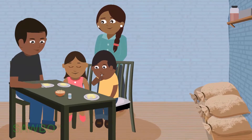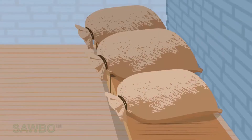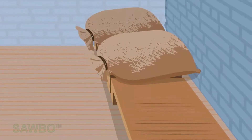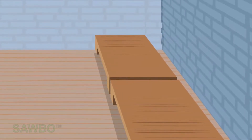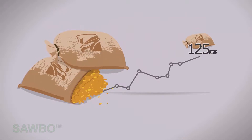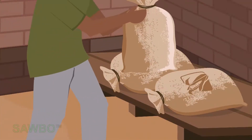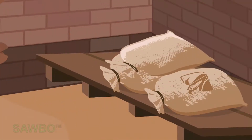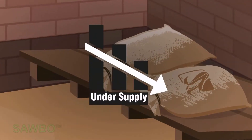Now we observe what happens when people continue to consume the maize while the farmers have not produced any new maize yet. The scale gets out of balance. The maize price goes up to 125 units per bag. Prices go up when supply is lower than the demand. We call this situation under-supply.